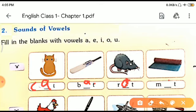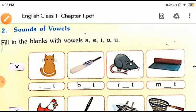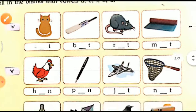Similarly, the third one, R-A-T, rat. And the fourth one, M-A-T, mat. You have to write A everywhere in the center.